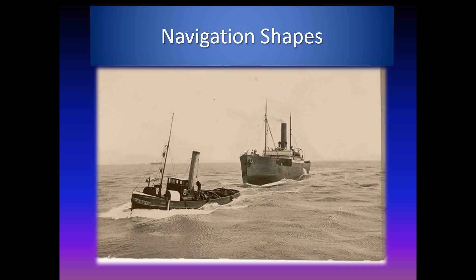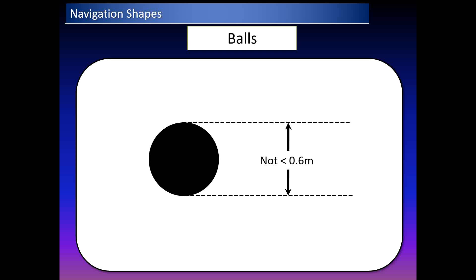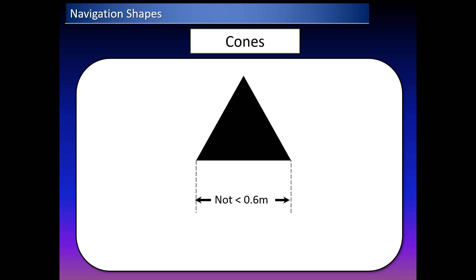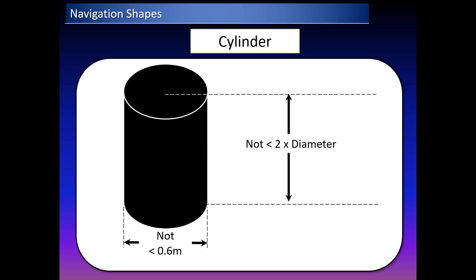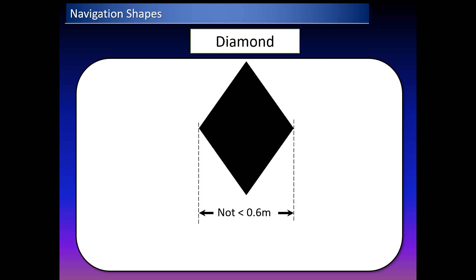Navigation shapes used for navigational purposes are balls, diamonds, cones, and cylinders — all black in color and of specific sizes. The ball must be not less than 0.6 meters in diameter. The base and height of the cone must also be not less than 0.6 meters. The cylinder has a base diameter of 0.6 meters and a height twice that — 1.2 meters. The diamond is two cones joined at the base, with base diameter not less than 0.6 meters.